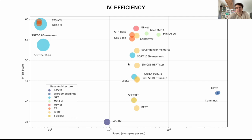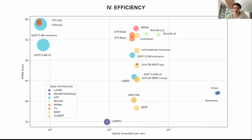Another key consideration is how efficient the model is. While very big models might have very good performance, they're not always the most efficient. In this plot, we have the average English score on the benchmark on the y-axis, and the x-axis is the speed of that model in terms of examples per second — how many examples can this model embed per second. The size of the circle denotes how big the vector dimension of the embeddings are, so a very big circle means it produces very large vectors, which take a lot of storage. On the right-hand side, we have GloVe and Commono, those word embedding models that are very fast because they just map words to vectors without doing complex computations or taking context into consideration. However, that also means they aren't very performant.